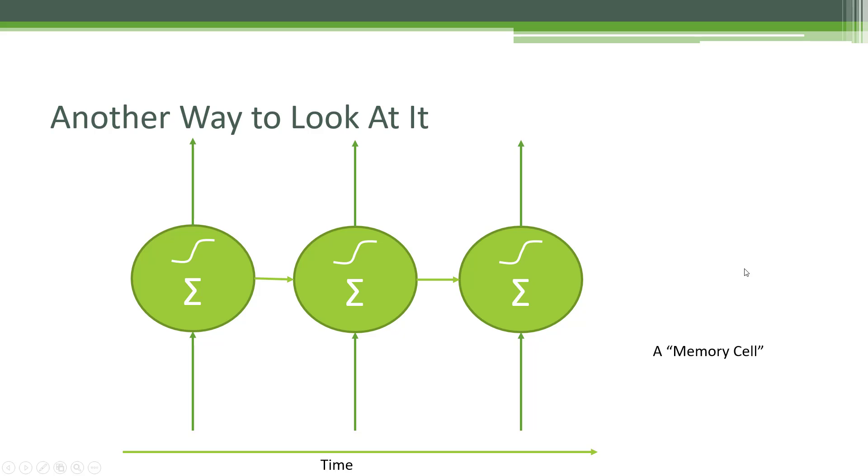So one property of memory cells is that more recent behavior tends to have more of an influence on the current behavior that you get out of a recurrent neuron. And this can be a problem in some applications, so there are ways to work against that that we can talk about later.